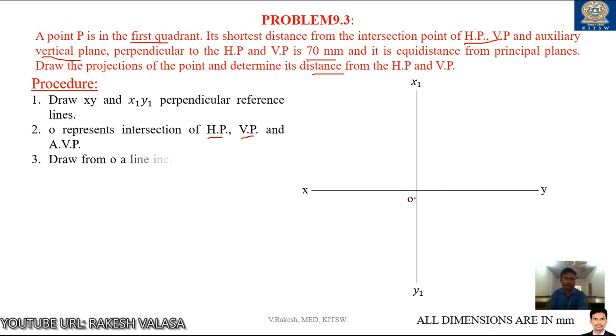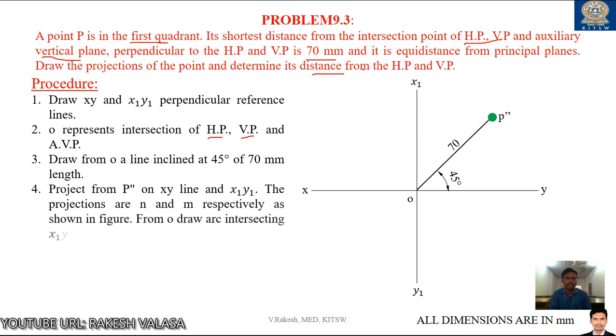From O point, draw a line inclined at 45 degrees with this horizontal plane or XY line. The shortest distance is this line distance is 70 mm. From O point with your mini drafter or protractor measure 45 degrees, line draw the line. The line length is 70 mm. This point name is P double dash. We can see this shortest distance in the side view so this point name is P double dash.